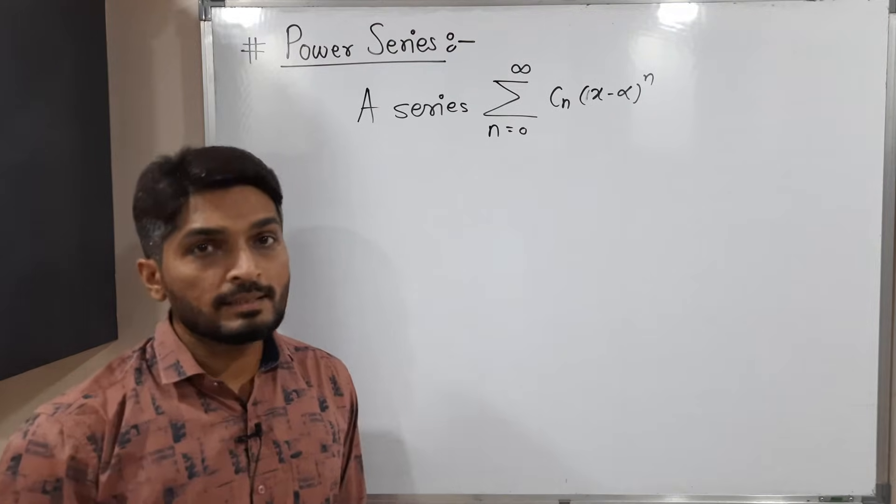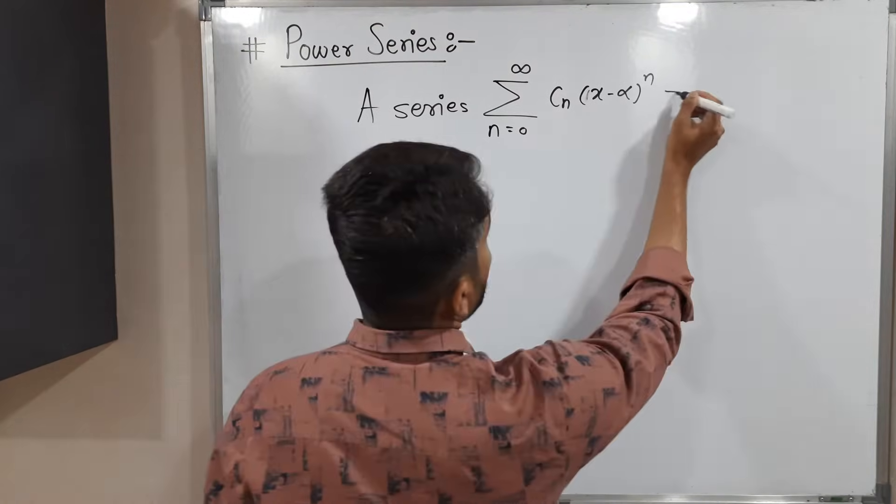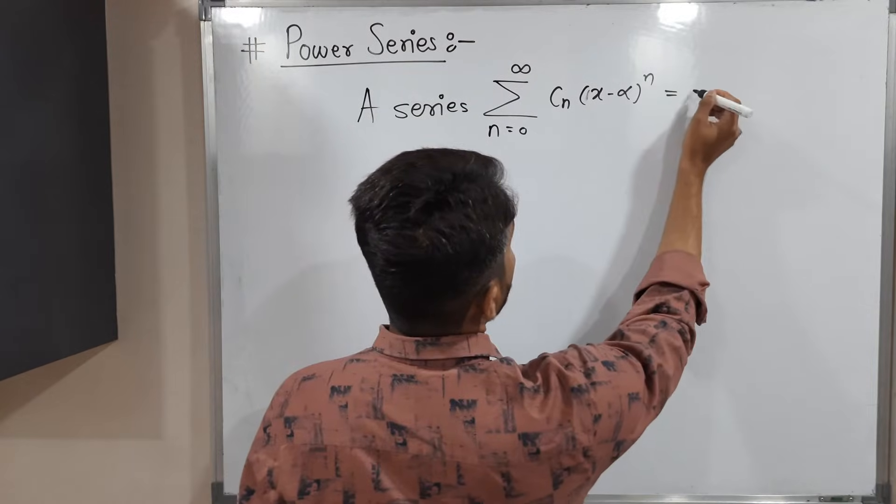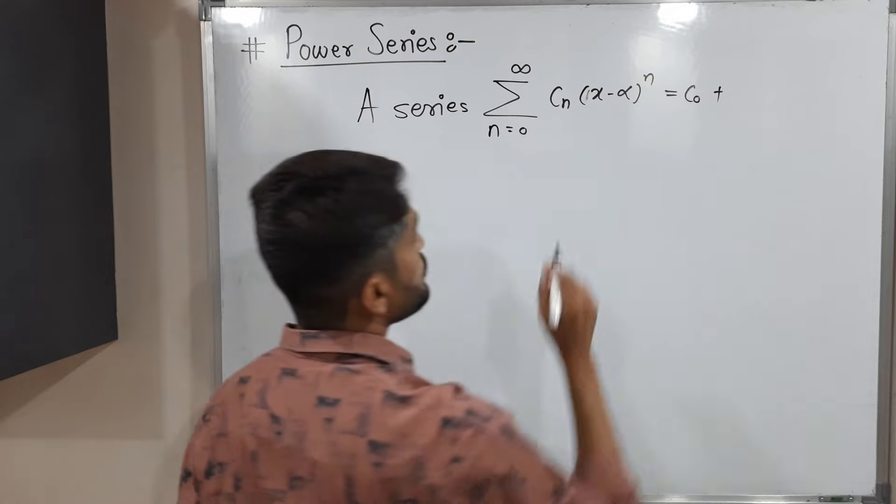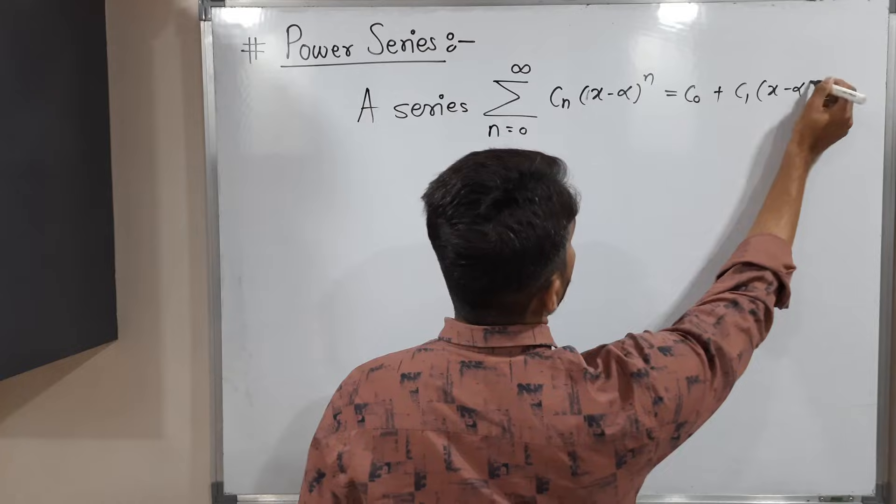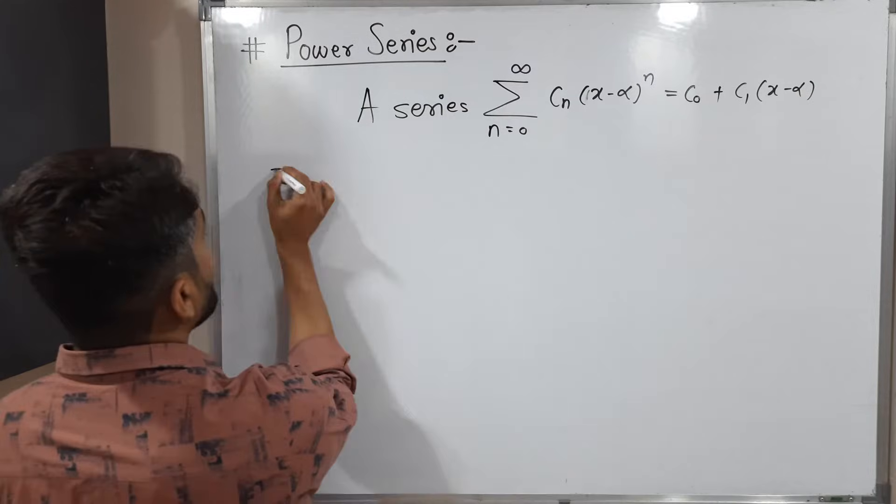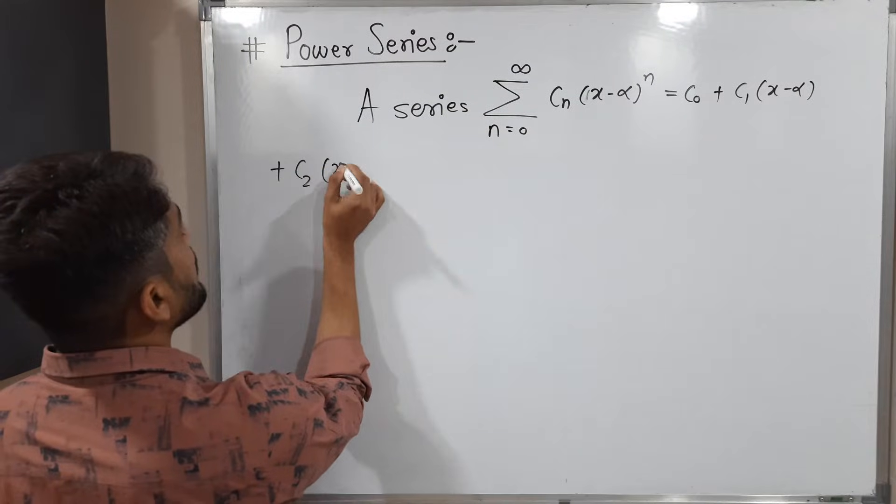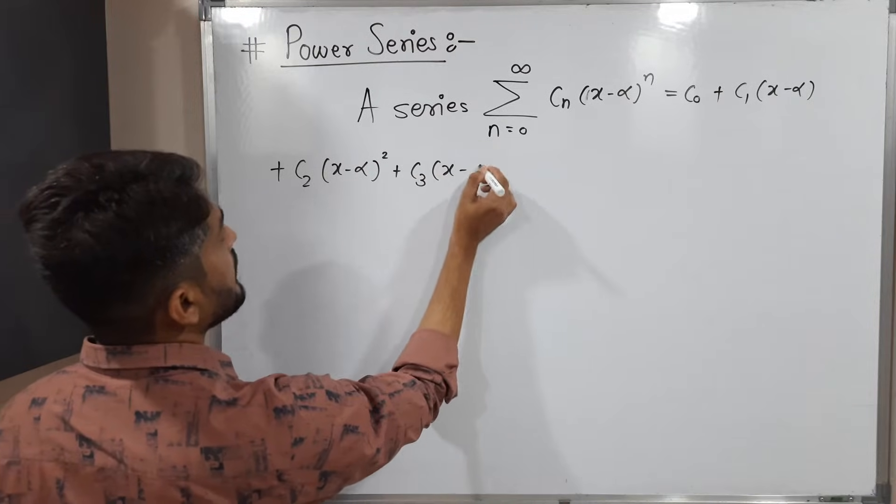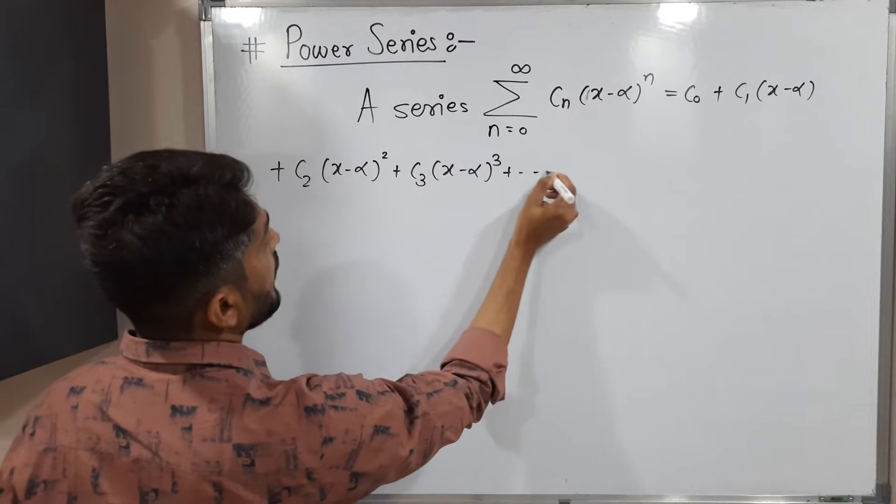If you expand this summation, let's see what happens. Initially I will put n equals 0, so we have c0 and the bracket to the 0 is 1. If I put n equals 1, c1 times x minus alpha to the power 1, plus c2 times x minus alpha square, plus c3 times x minus alpha cube, and so on.